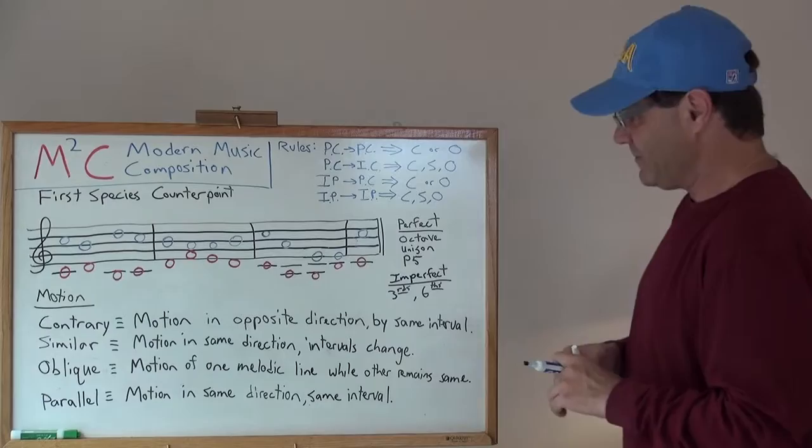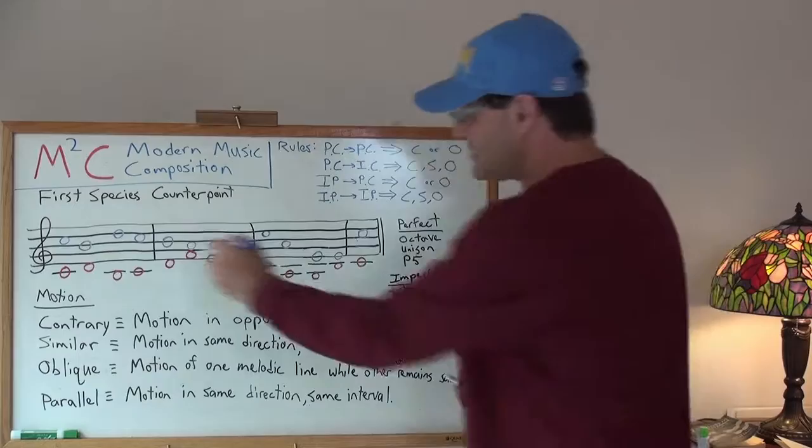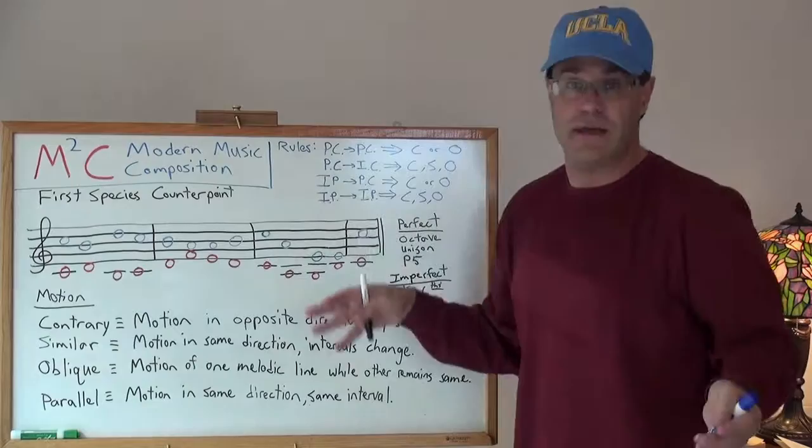This is now first species counterpoint where all of these are in consonants and this by itself is its own freestanding melody. The red is its own freestanding melody and together they're harmonious. Okay. It's like good neighbors.